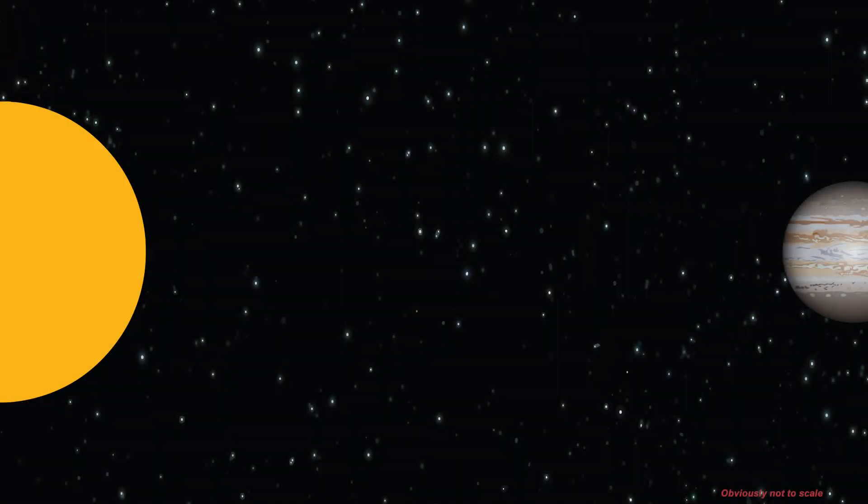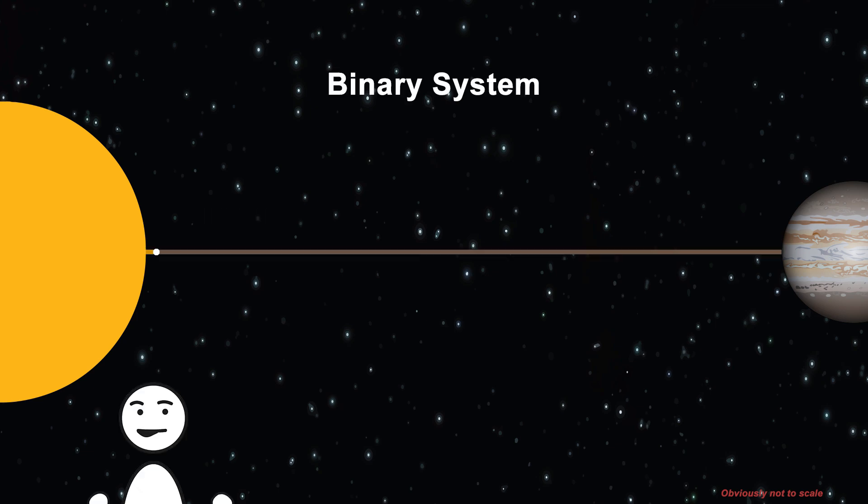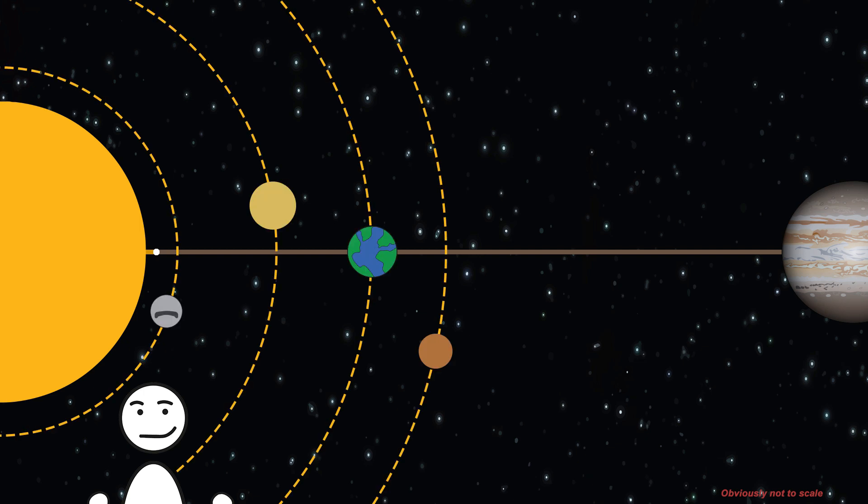This means the shared barycenter lies in space above the surface of both celestial bodies, turning our solar system into a planet-star binary system. And not by a small margin. Would this turn Jupiter's moons into planets? Not really.